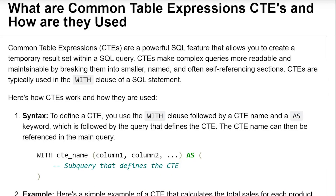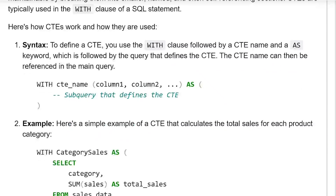What are Common Table Expressions, CTEs, and how are they used? Common Table Expressions are a powerful SQL feature that allows you to create a temporary result set within a SQL query. CTEs make complex queries more readable and maintainable by breaking them into smaller, named, and often self-referencing sections. CTEs are typically used with the WITH clause of a SQL statement.